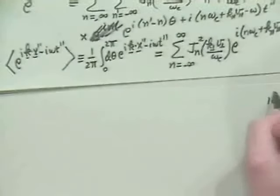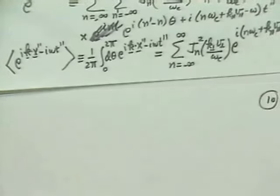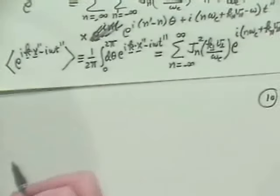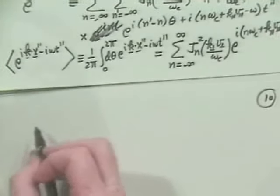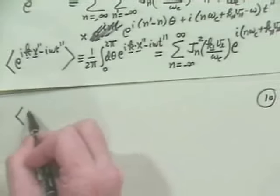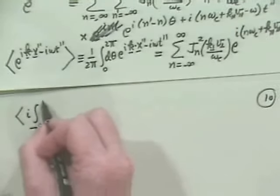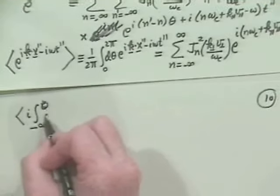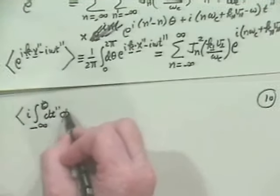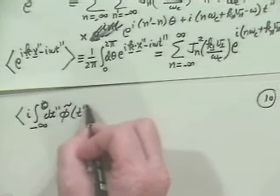So we had this result, which was a funny average along orbits of e to the i k dot x minus i omega t. This was in pursuit of finite Larmor radius or finite gyroradius effects, and that allows us then to calculate the average over gyrophase angle of minus infinity up to zero dt double prime of phi tilde of t double prime.